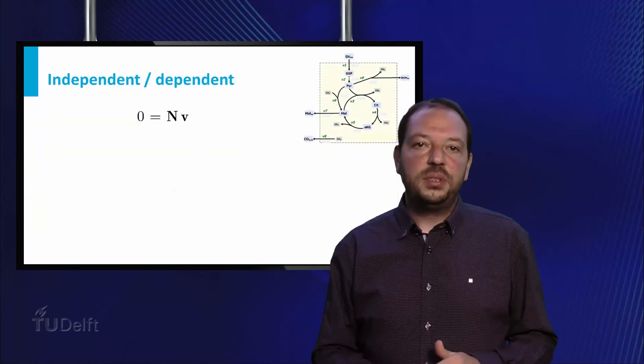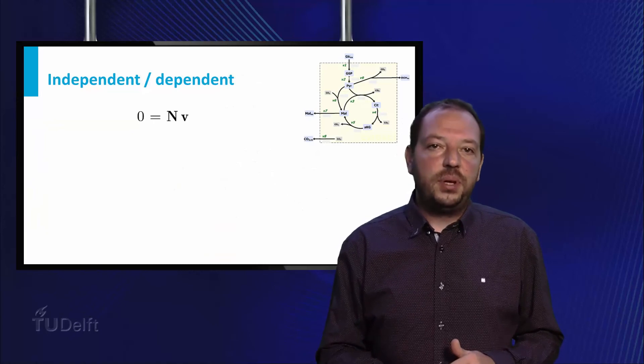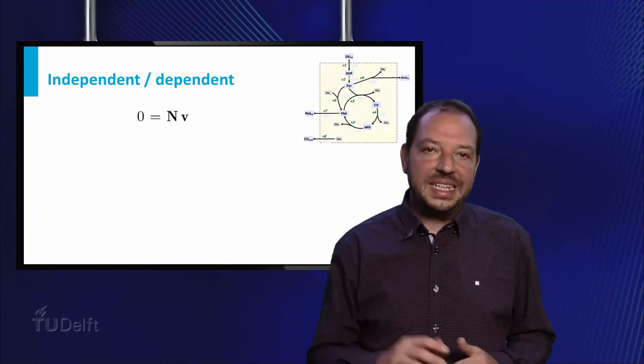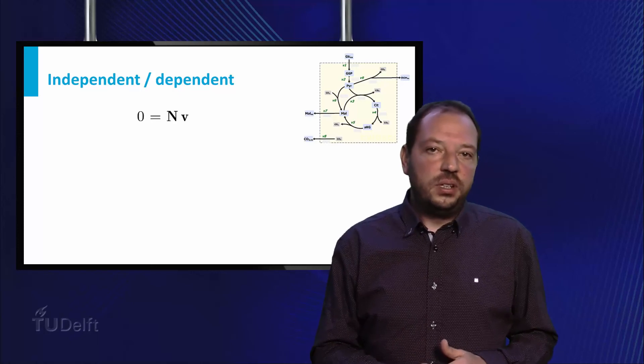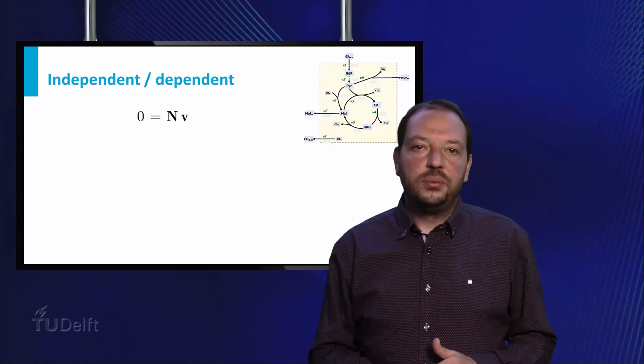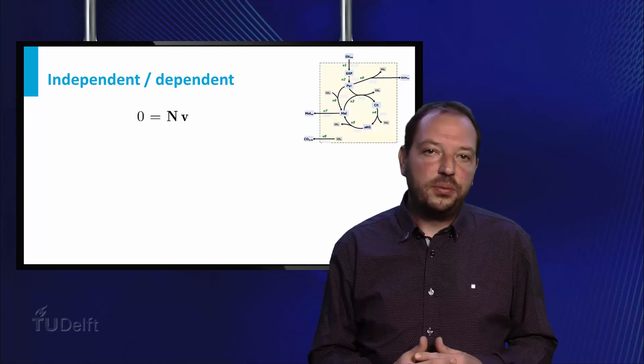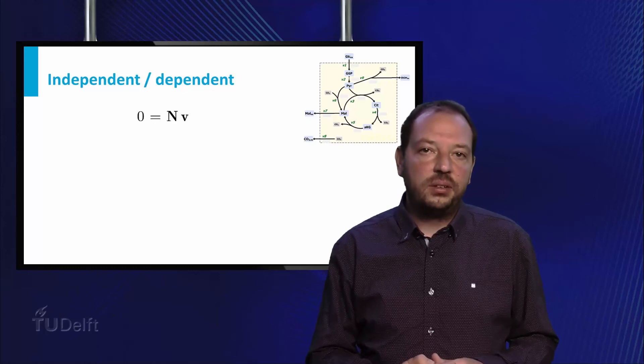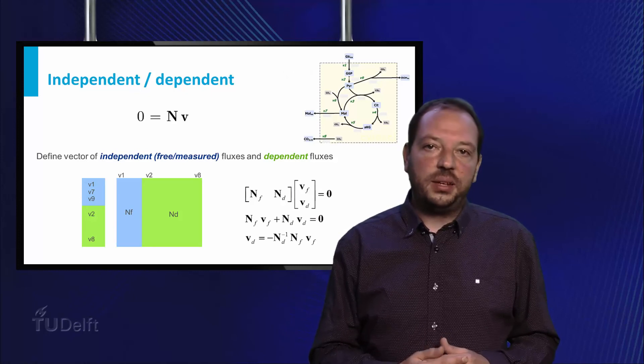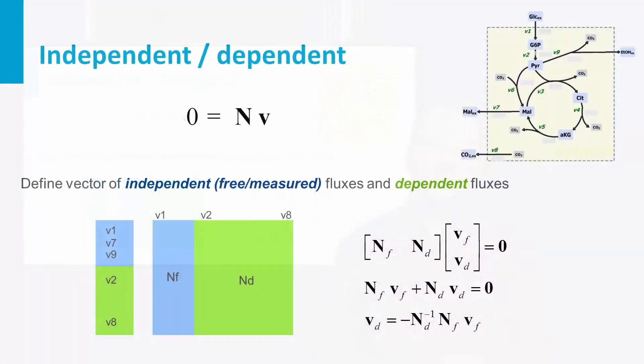Let's assume we have measurements from an experiment and we obtain the rates for V1, V7, and V9. These are now known variables which can be separated from the unknowns. This is performed by rearranging the flux vector into known and unknown. Multiplying the equations, we obtain 0 equals Nf multiplied by Vf plus Nd multiplied by Vd. The unknowns can now be placed on the left-hand side. All known fluxes are on the right-hand side.